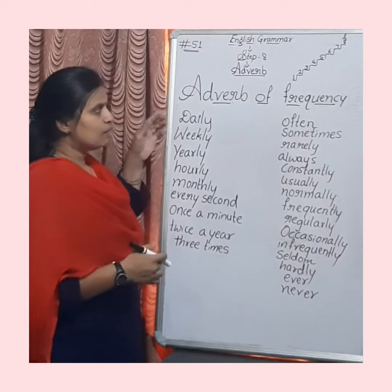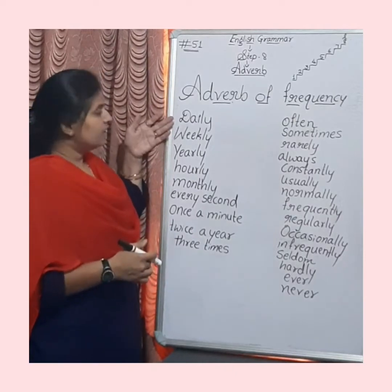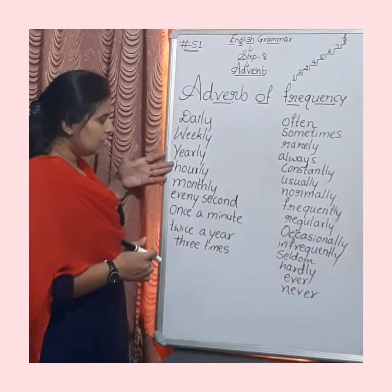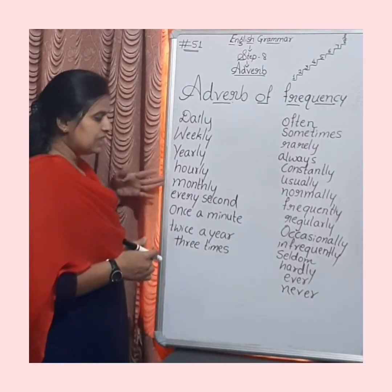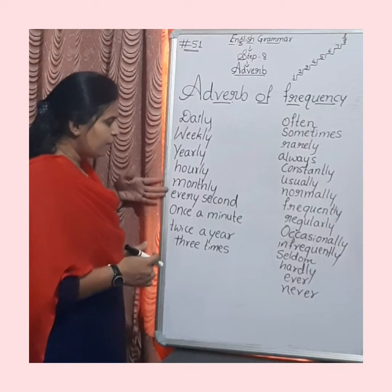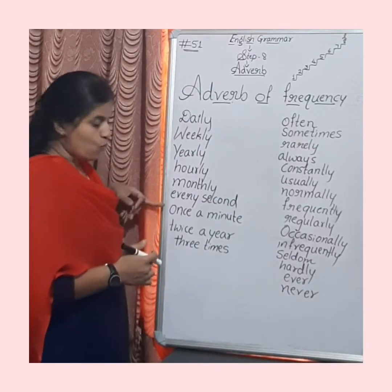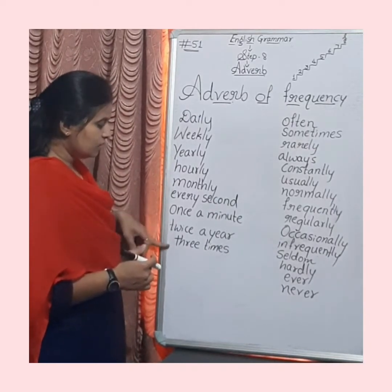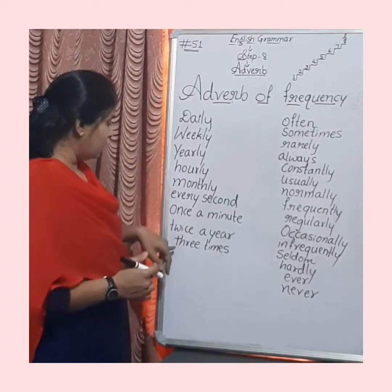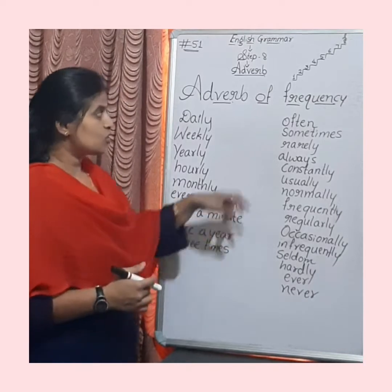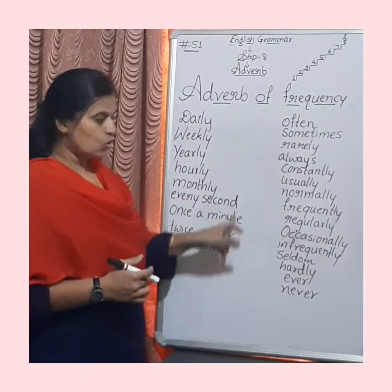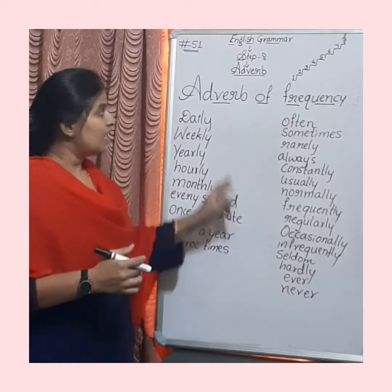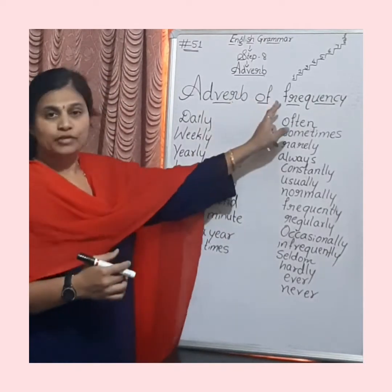For example, the first group of adverbs of frequency: daily, weekly, yearly, hourly, monthly, every second, once a minute, twice a year, three times. These are all indicating adverb of frequency.